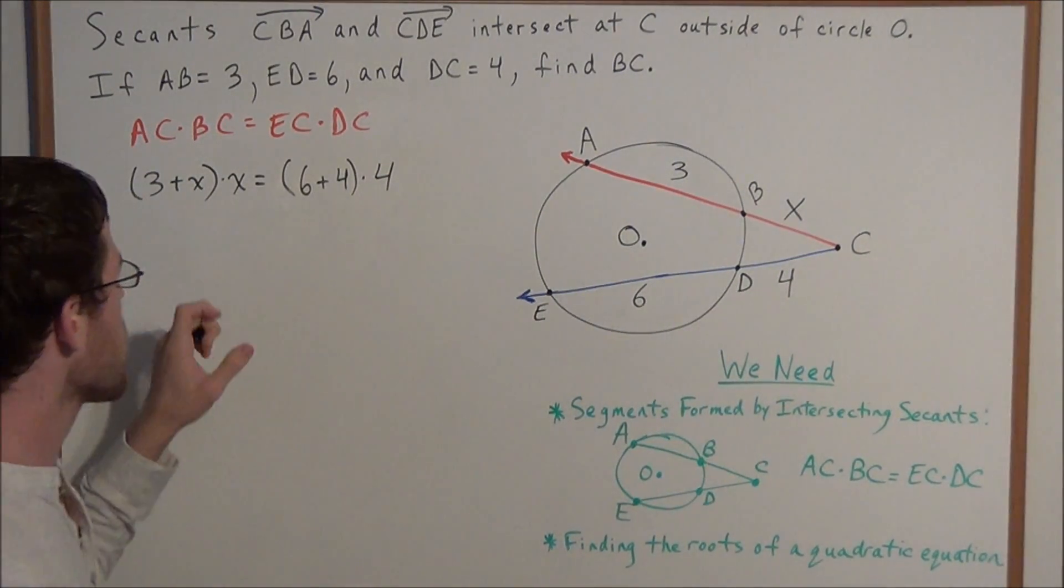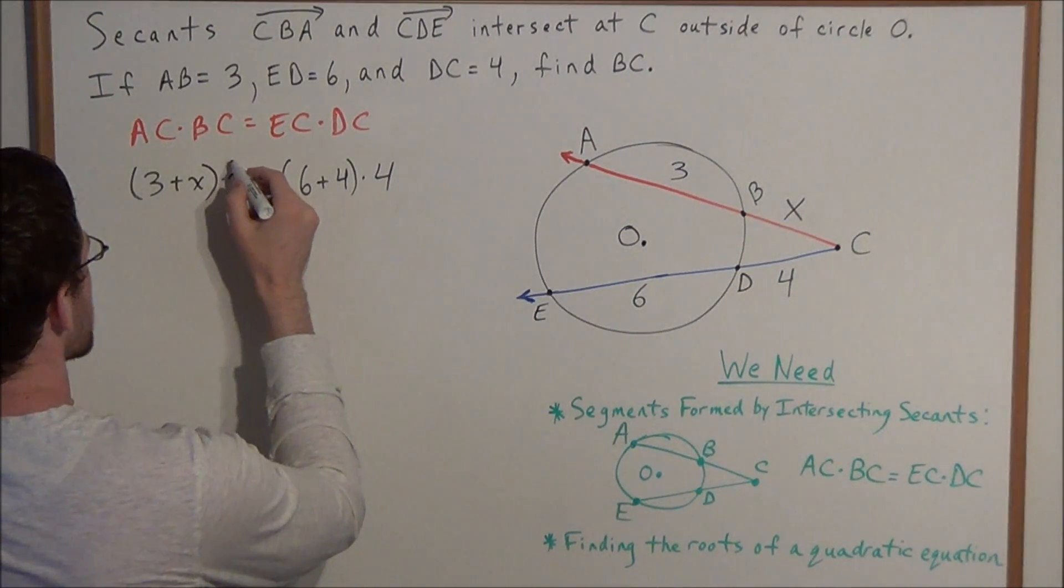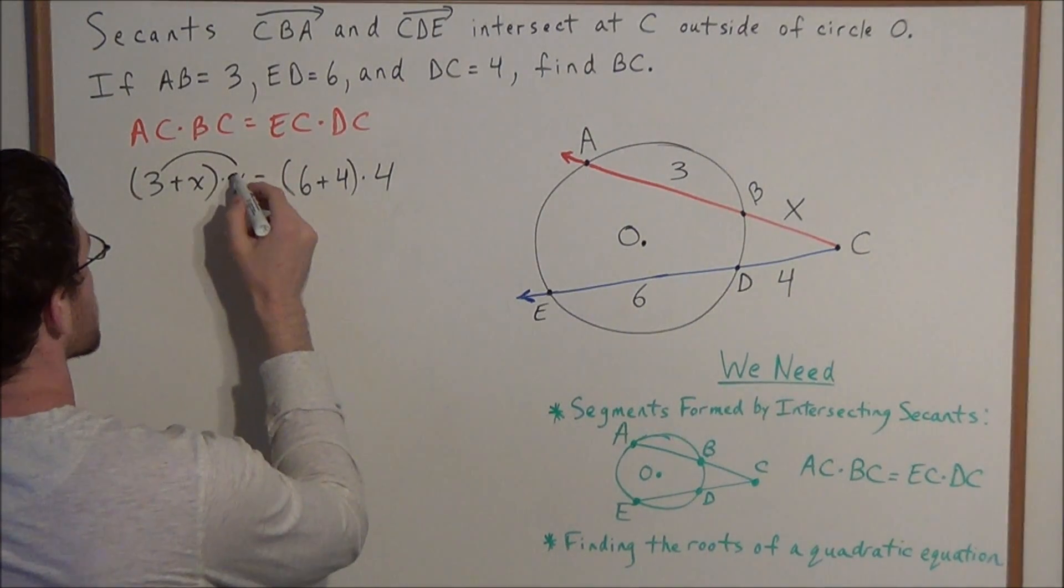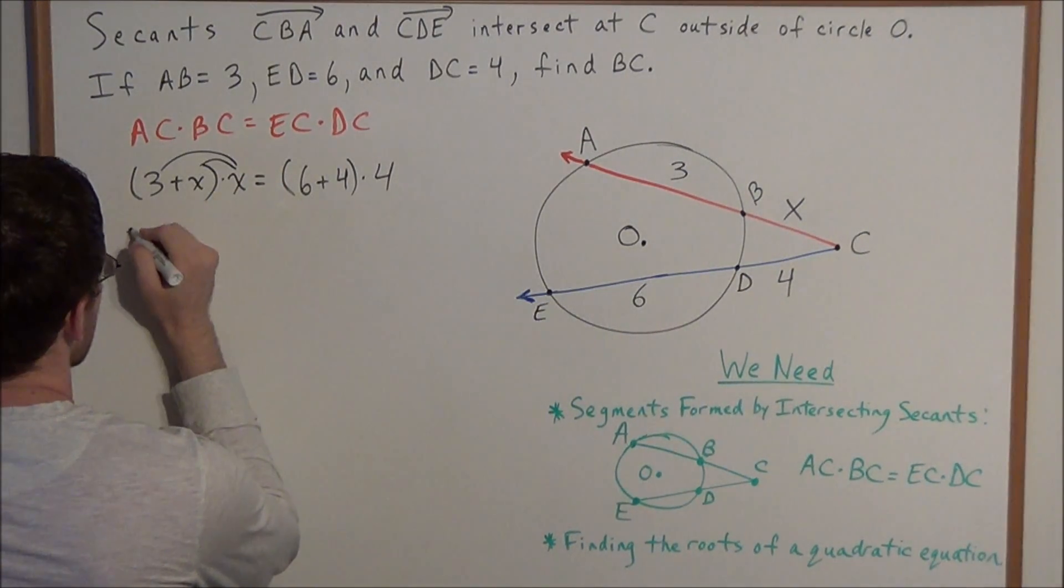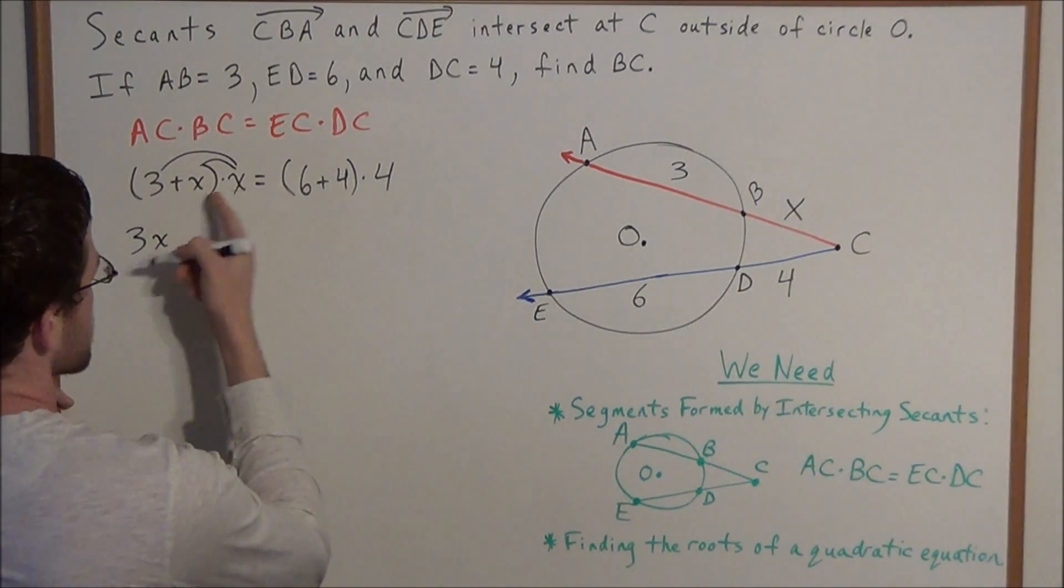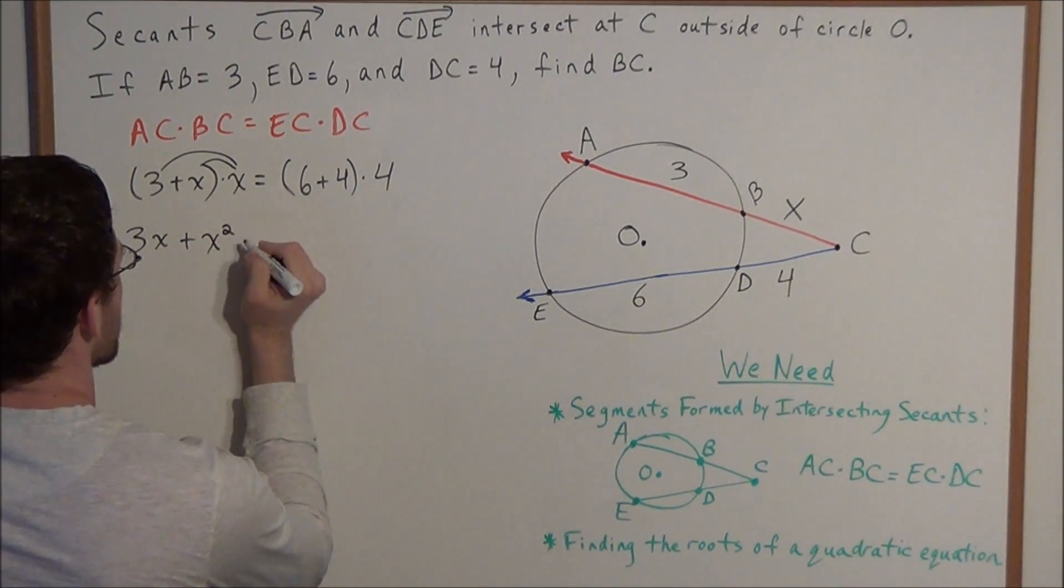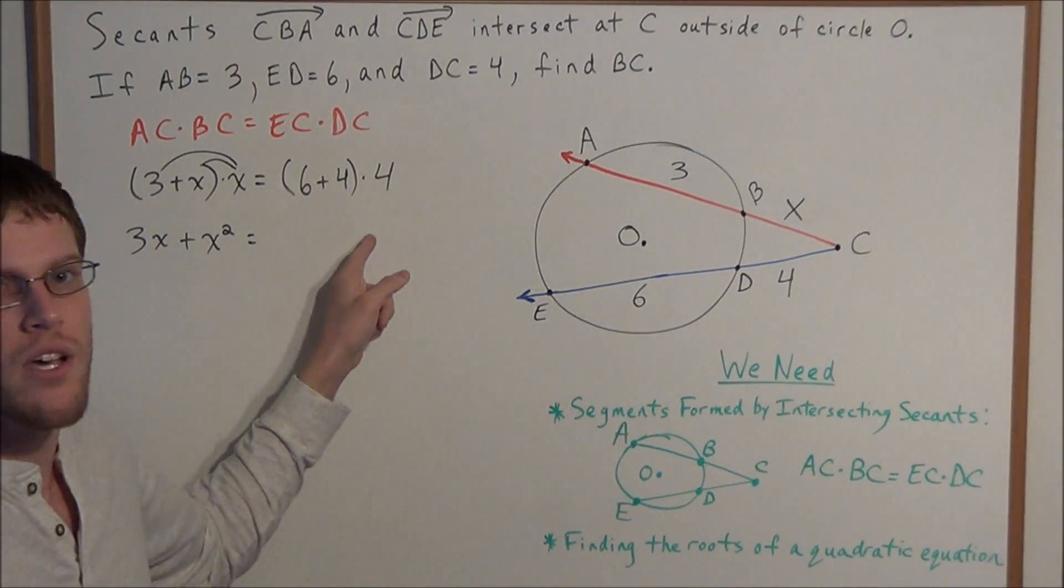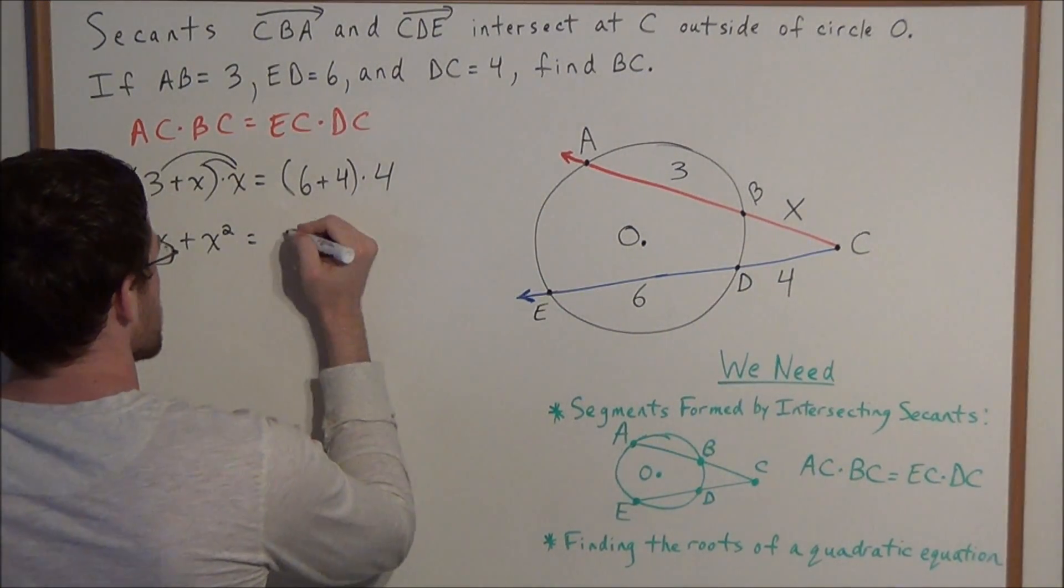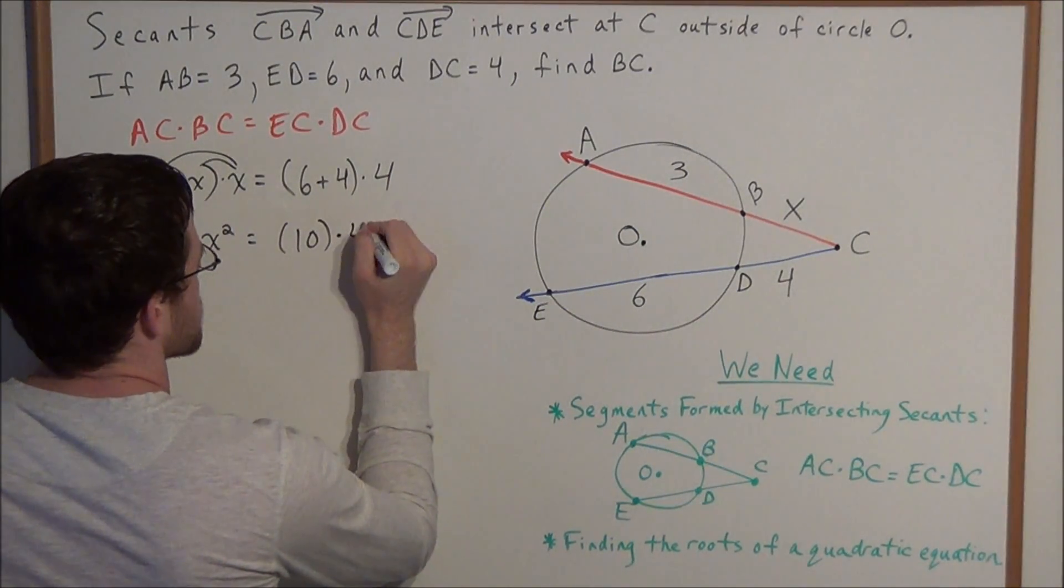So now we need to simplify and then solve for X. On the left hand side, we distribute: X times 3 and X times X. Well, 3 times X is 3X and X times X is X squared, so we have 3X plus X squared. On the right hand side, we can simplify what's inside the parentheses: 6 plus 4 is 10 times 4.